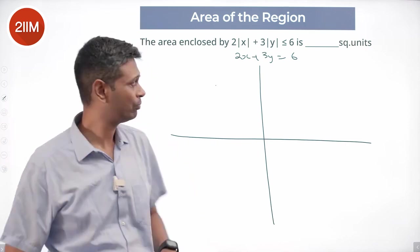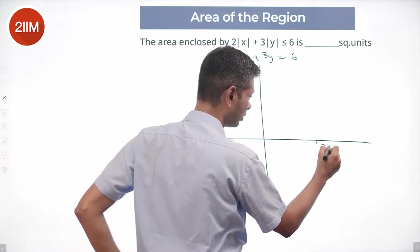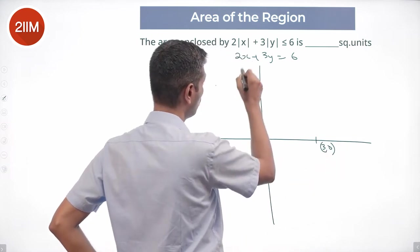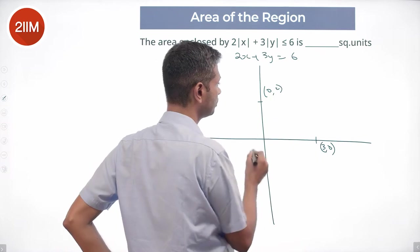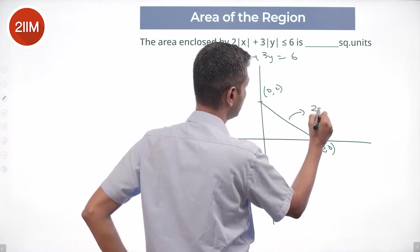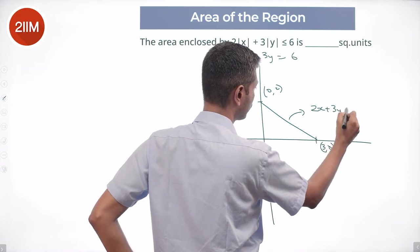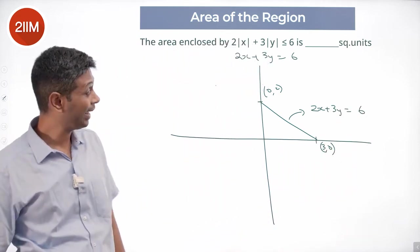Let's say, nice. Then x equals 3, 3 comma 0, y is 0, that will work. 0 comma 2 will work. We join this. This is the equation 2x plus 3y equals 6. Nice.